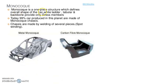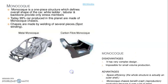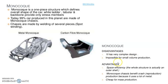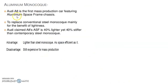Monocoque structure: Monocoque is a one-piece structure which defines the overall shape of the car, while ladder, tubular and backbone frames only provide stress members. Today 99% of cars produced are made with monocoque chassis, made by welding several pieces together. Monocoque's disadvantages include very complex design and being impossible for small-volume production. Its advantages include space efficiency and benefits in crash protection; it is also cheap for mass production. Aluminum monocoque: The Audi A8 was the first mass-production car featuring an aluminum space frame chassis to replace conventional steel monocoque, mainly for the benefit of lightness. Audi claimed the ASF is 40% lighter yet 40% stiffer than a contemporary steel monocoque.